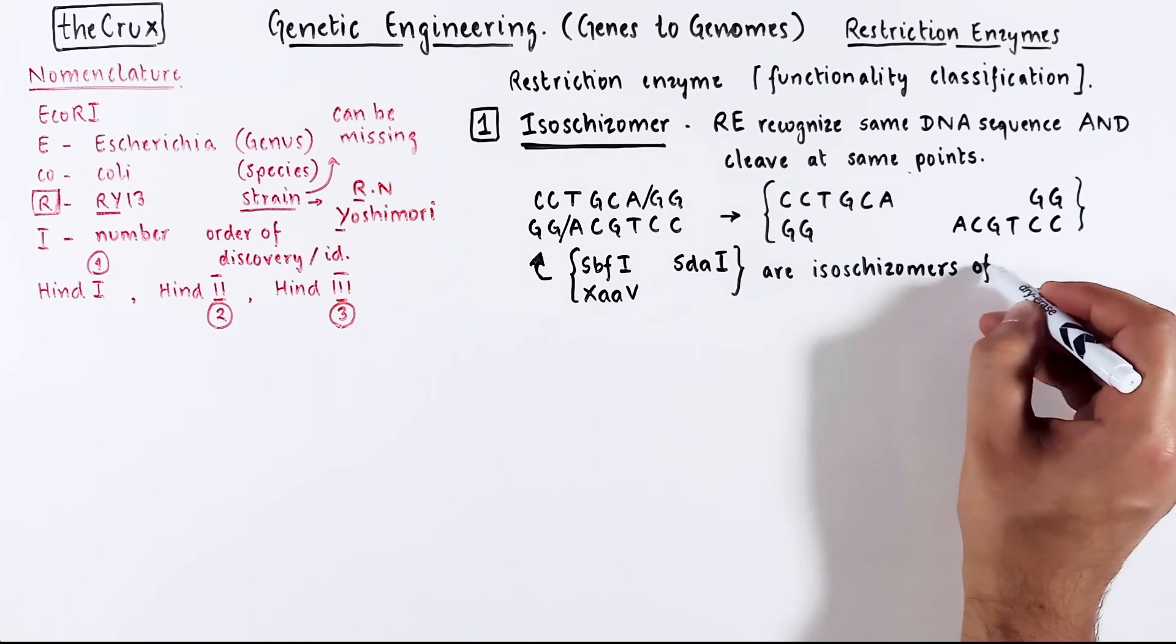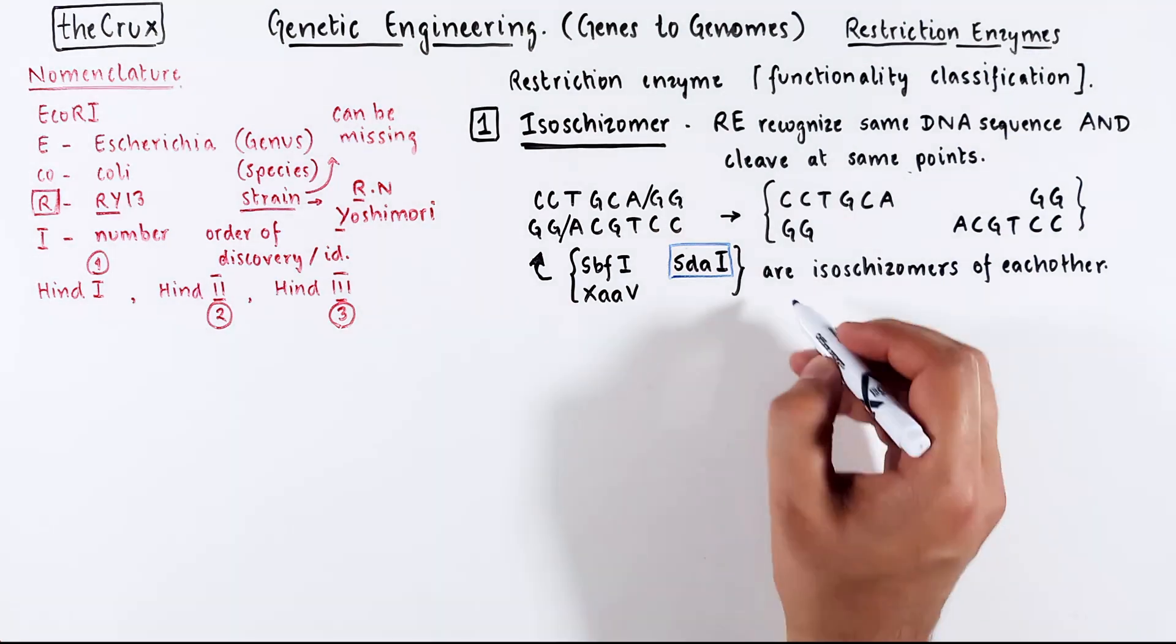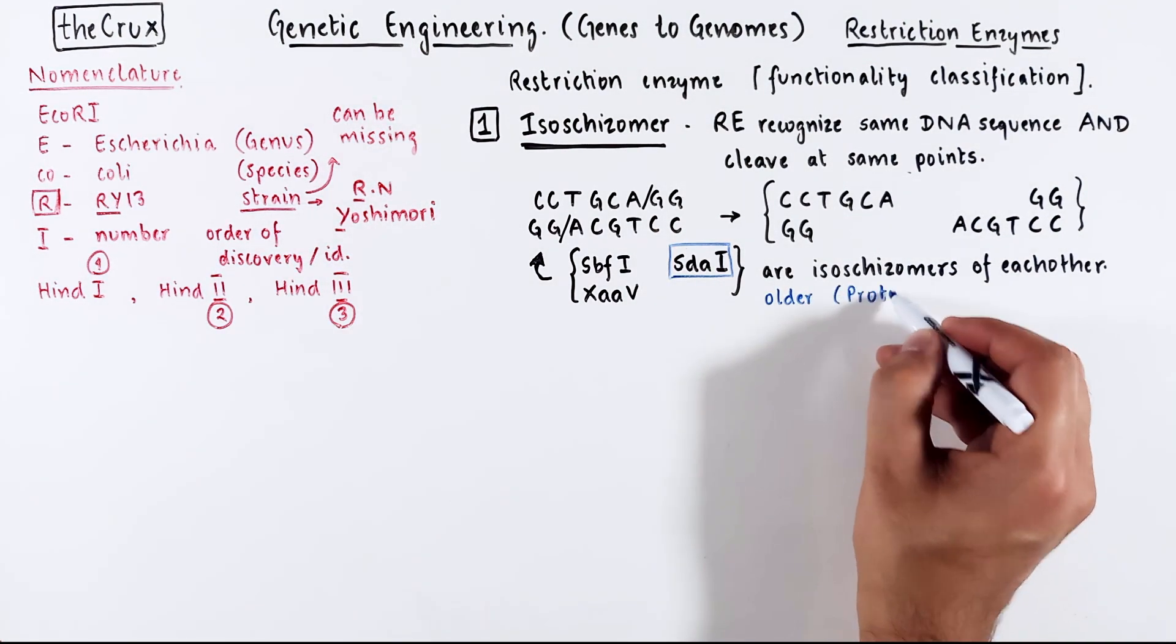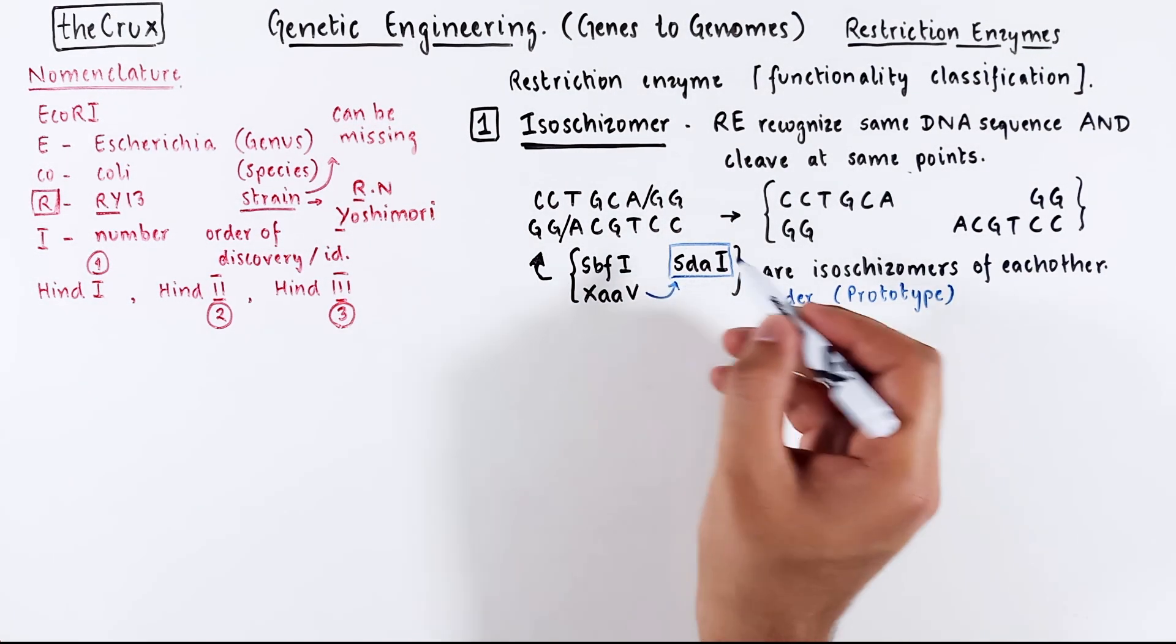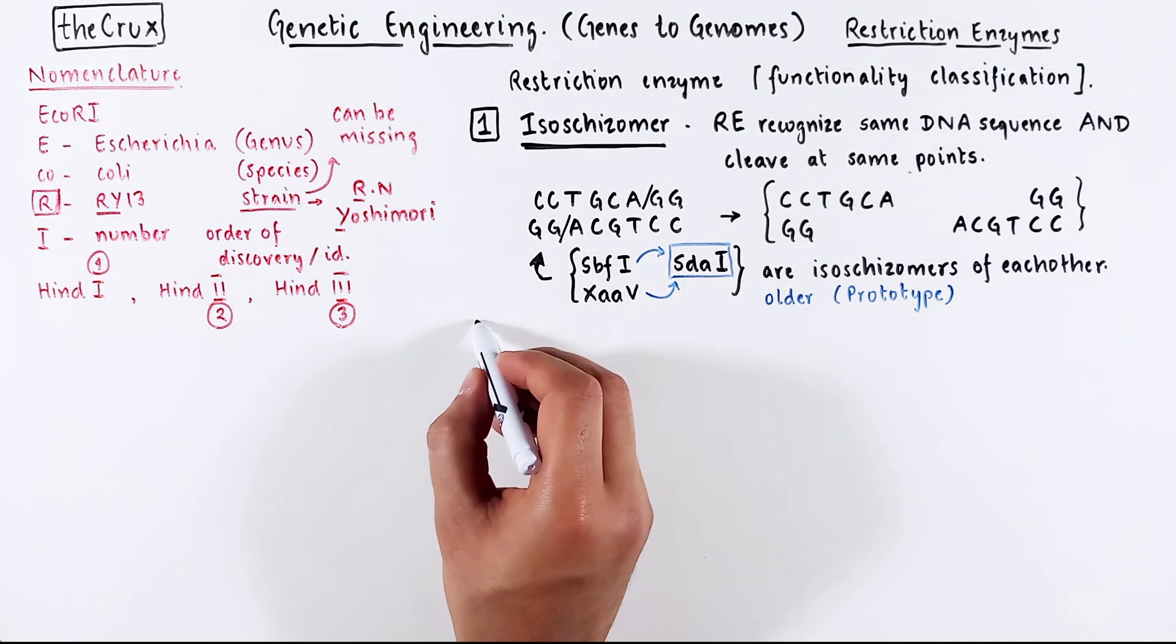There's a slight nuance. In an isochizomer set, there's always an enzyme which was identified first. The OG, the elder one. We call this OG enzyme a prototype. So sometimes you will see old papers saying that SPF1 and XAA5 are isochizomers for SDA1.